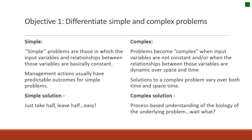Simple problems are often harder to differentiate from complex problems than we may want to initially admit. Simple problems are defined as those in which the inputs and the relationships between the variables are pretty much constant — all the working parts are constant over time and space. When problems are constant, the solution is generally pretty simple because there is just one answer. Under these circumstances, management actions usually have predictable outcomes.